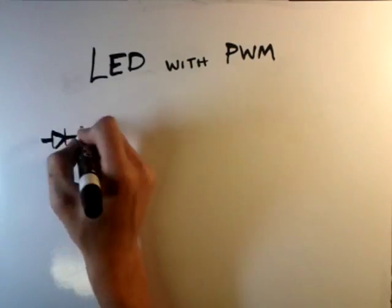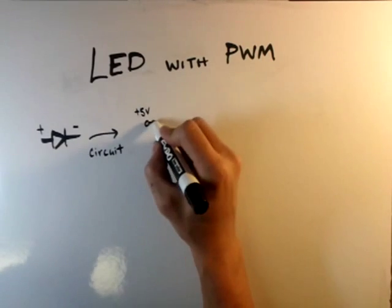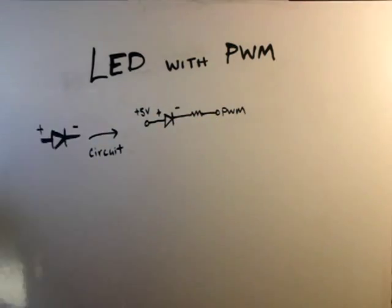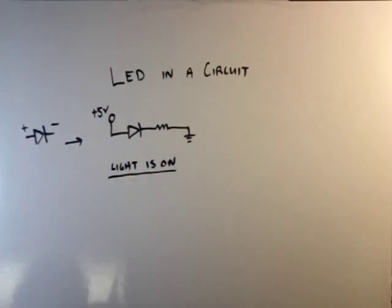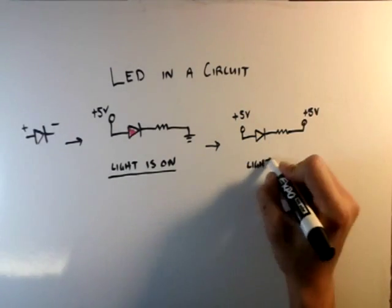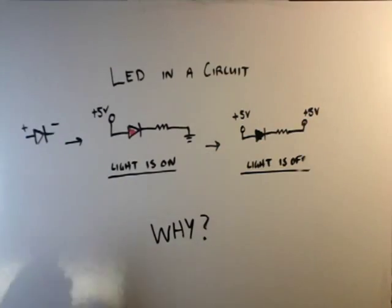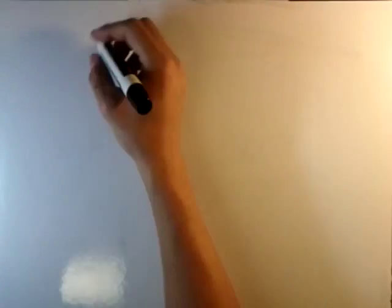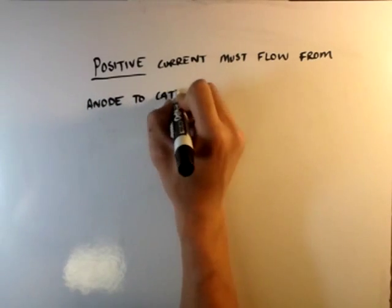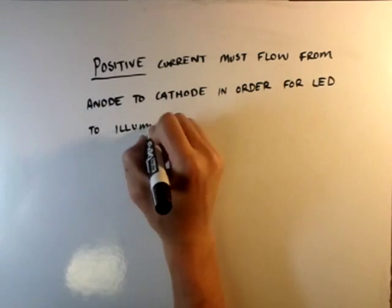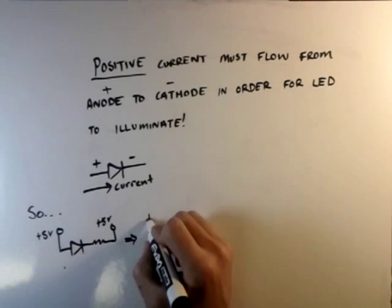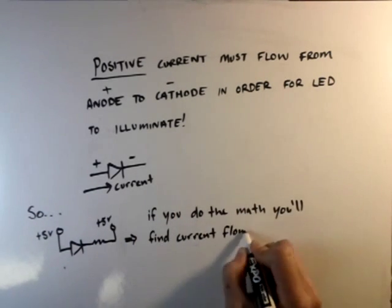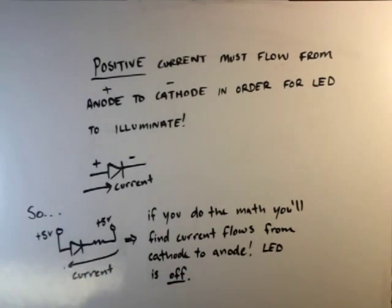Incorporating a common anode RGB LED with pulse width modulation, the circuit needs to be hooked up in this fashion. A PWM pin is either hooked up to ground or to plus five volts in the case of the Arduino. When it's connected to ground, the LED is going to be on, but when it's connected to plus five volts, the light is going to be off. So in order for the LED to turn on, current has to flow from anode to cathode, which is what happens when the PWM pin equals ground. However, if the PWM pin equals plus five volts, current tries to flow from cathode to anode, which makes the LED turn off.